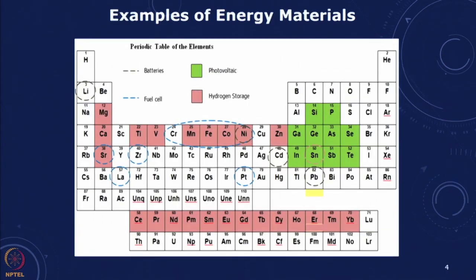If we look at the periodic table, there are several materials including rare earths that are becoming important for batteries, storage, and photovoltaics. You have materials coming in for photovoltaics, lead acid batteries, cadmium telluride, chromium, nickel, cobalt, lithium, and materials used for hydrogen storage. Many of these materials are located in specific regions and a few countries, and they involve significant amounts of energy in their extraction.